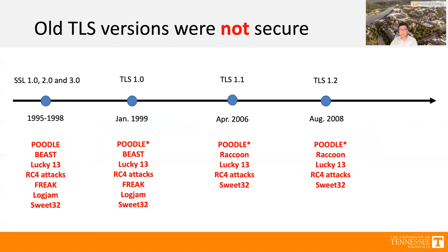TLS looks like a perfect protocol. However, we have seen all TLS versions are not secure — there are a lot of TLS vulnerabilities discovered. Particularly in 2014, the Google security team discovered the Poodle attack that can exploit the CBC mode padding vulnerabilities when falling back to SSL 3.0. To improve security and mitigate these vulnerabilities, TLS 1.3 was presented and officially approved in August 2018.